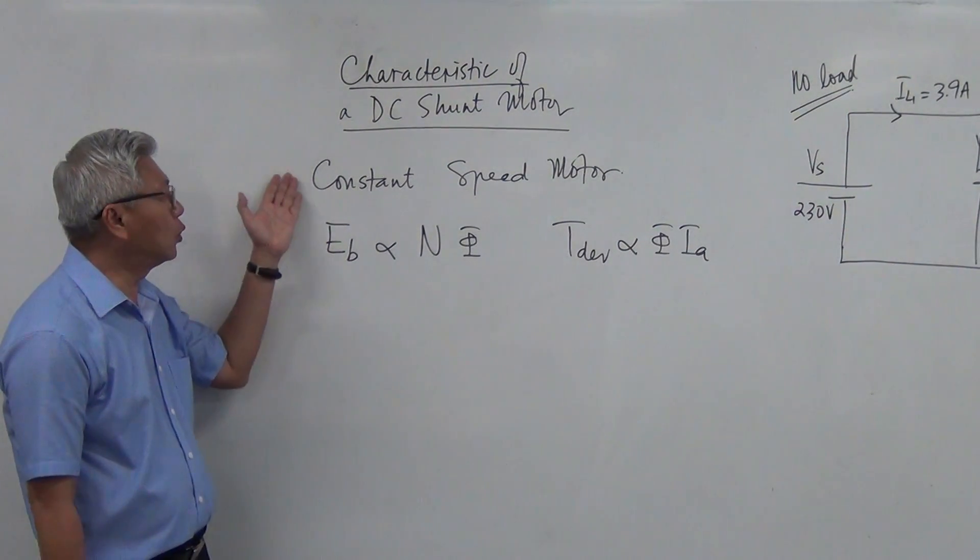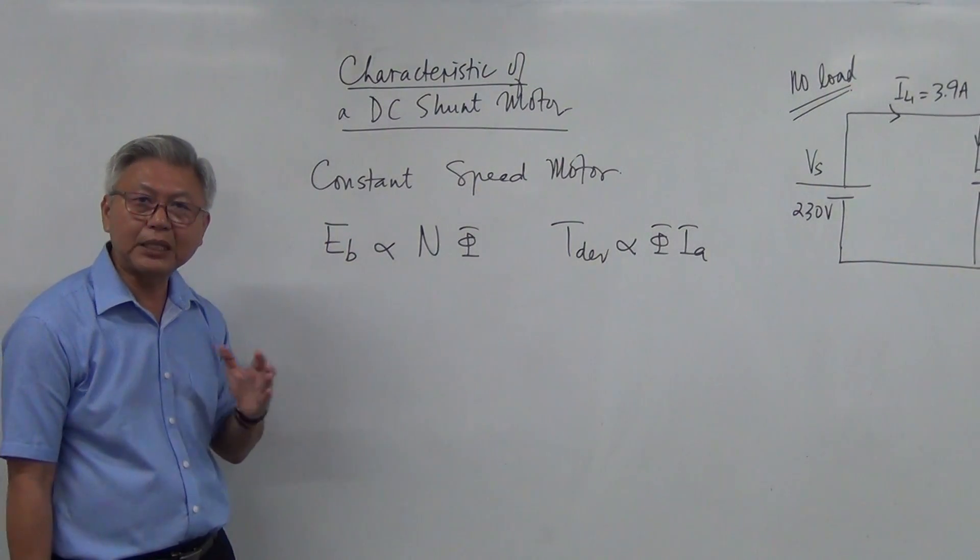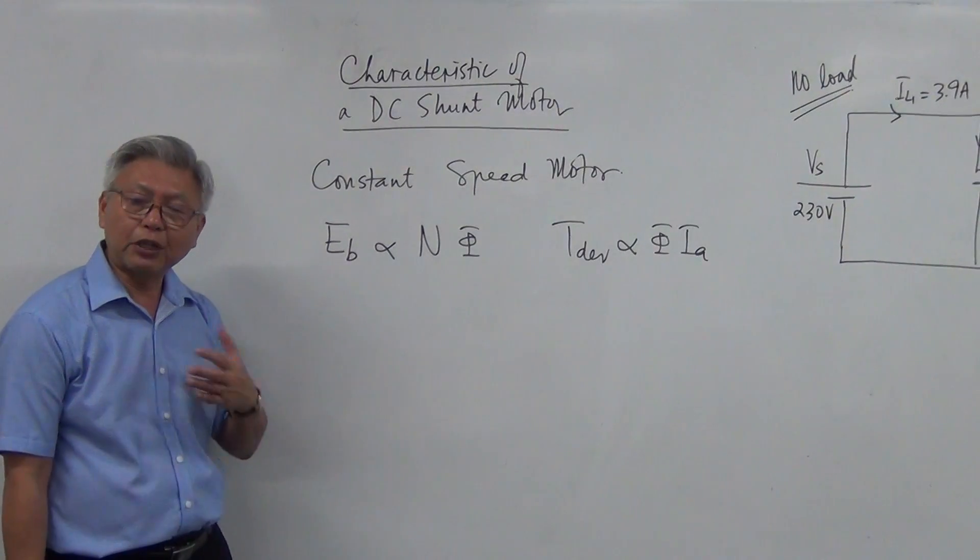Shunt motor is good for a constant speed. That is the shunt motor's characteristic. In other words, the speed doesn't change much with a variation of torque.